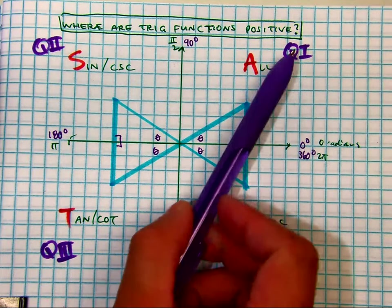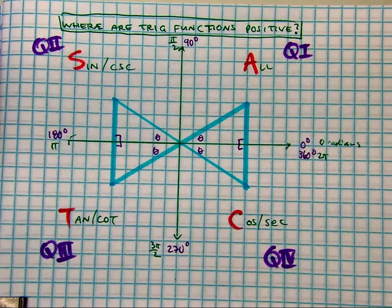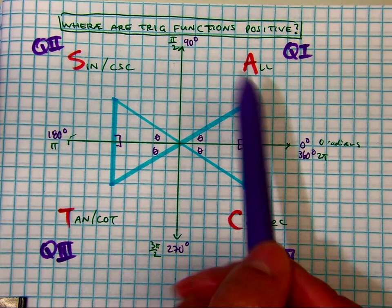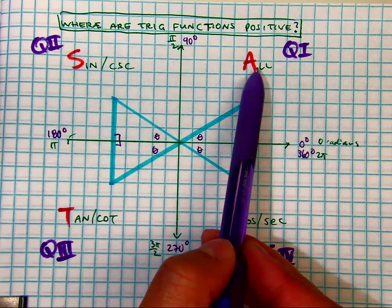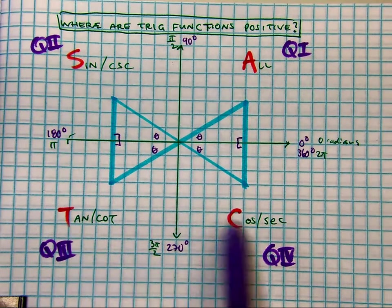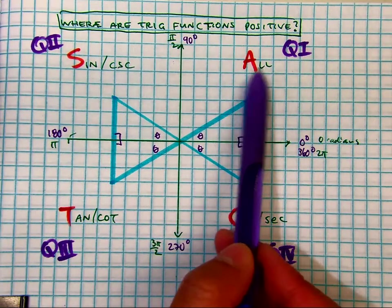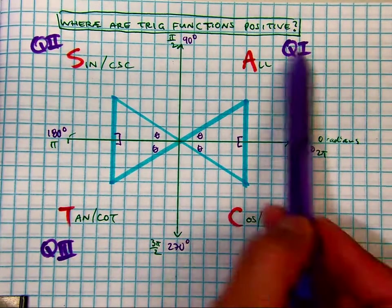Well, we have quadrants 1, 2, 3, and 4, and there's letters that kind of tell us ASTC. The A stands for all. All of the trig functions are positive in quadrant 1.